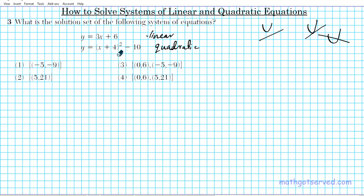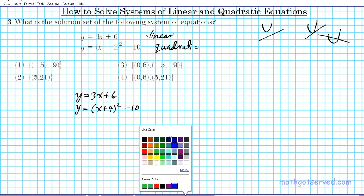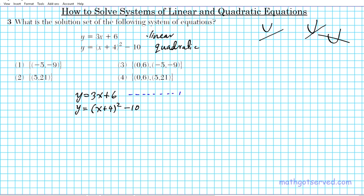Alright, so let's go ahead and solve this. This can be solved with a graphing calculator or you can solve this algebraically. We're going to solve this algebraically. We have y equals 3x plus 6 and y equals quantity x plus 4 square minus 10. Let's label our equations. Let's call the first one equation one and call this equation two.